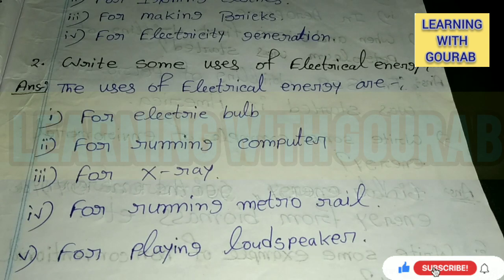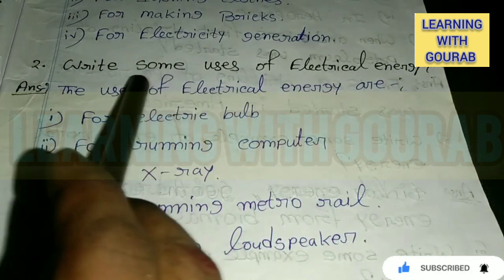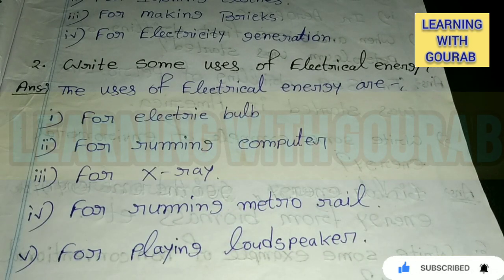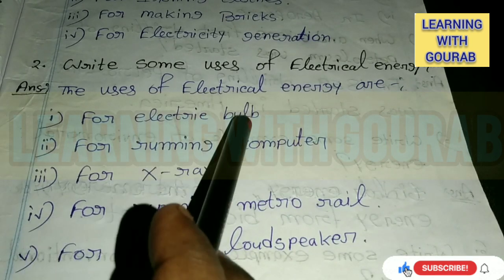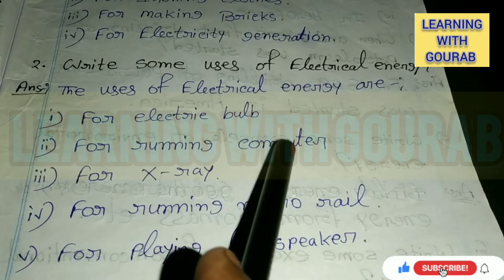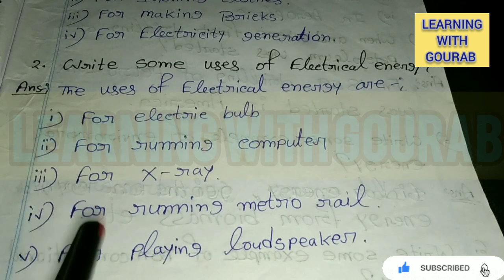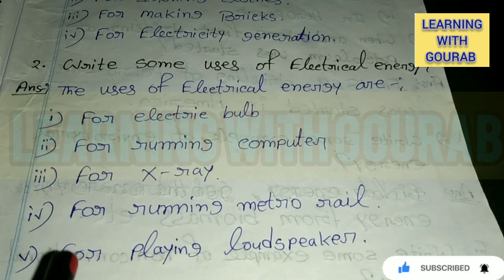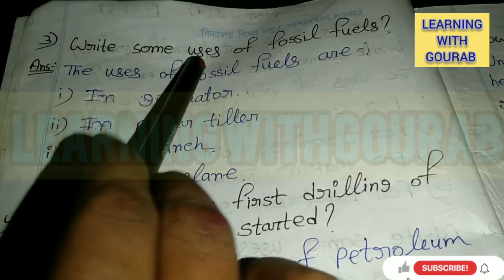Next question: Write some uses of electrical energy. The uses of electrical energy are: for electric bulbs, for running computers, for X-ray, for running metro rail, and for playing loudspeakers.